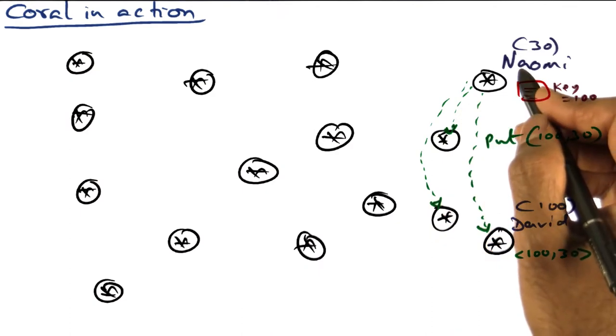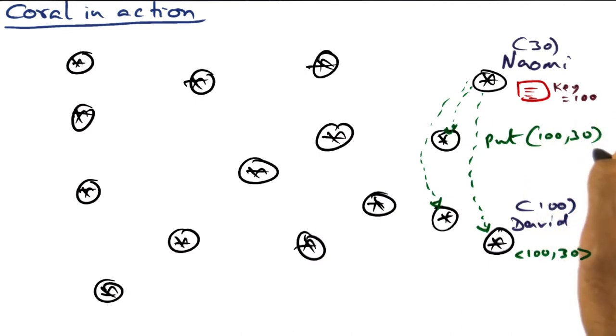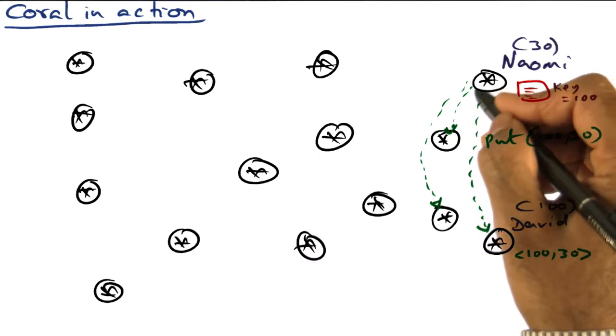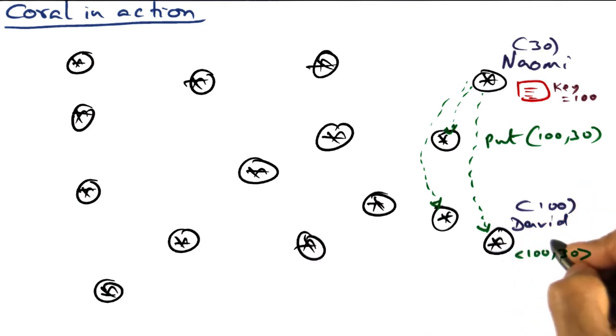So Nomi, what she's going to do, is going to make a series of RPC calls to put 130 key value pair. And she finds that none of the intermediate nodes are either full or loaded, and finally she reaches David's computer. David also says, my node is neither full nor loaded.